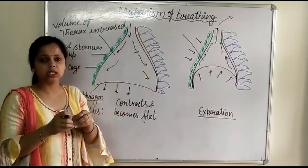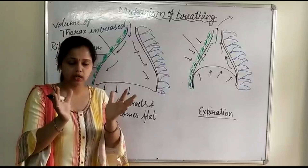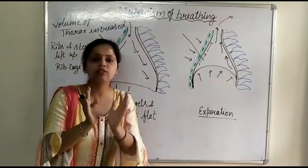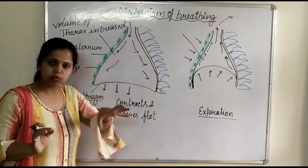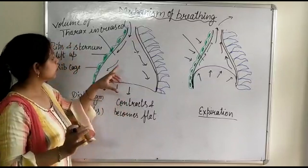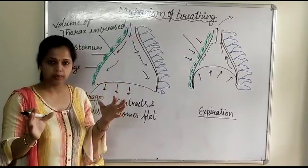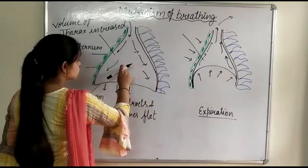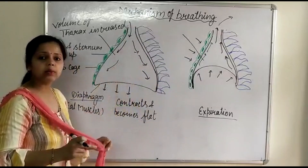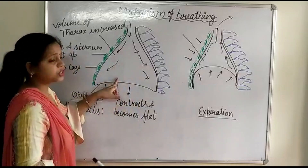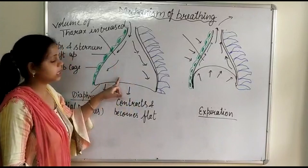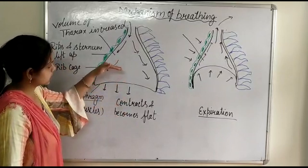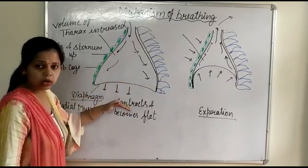When the thoracic cavity volume increases, the lungs inside automatically expand as well. This is called an increase in pulmonary volume — the volume of the lungs. When the pulmonary volume increases, the air pressure inside the lungs, called intra-pulmonary pressure, decreases.